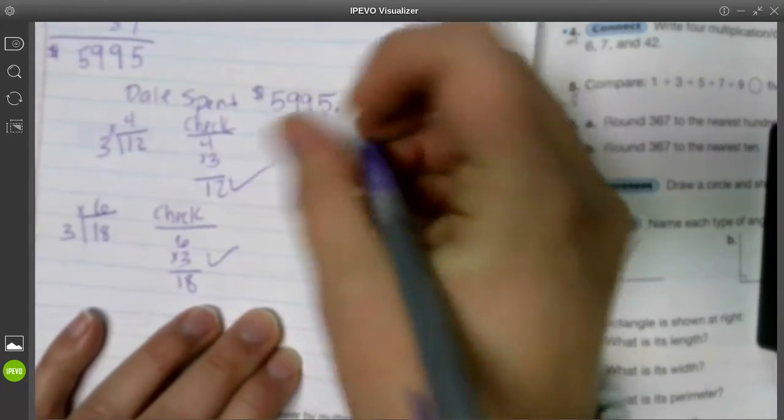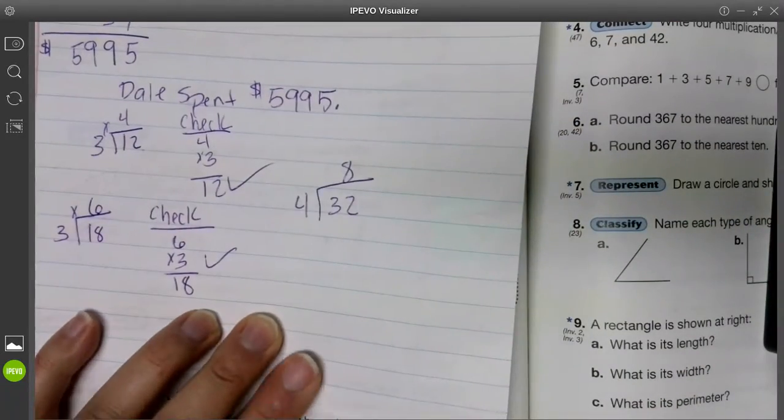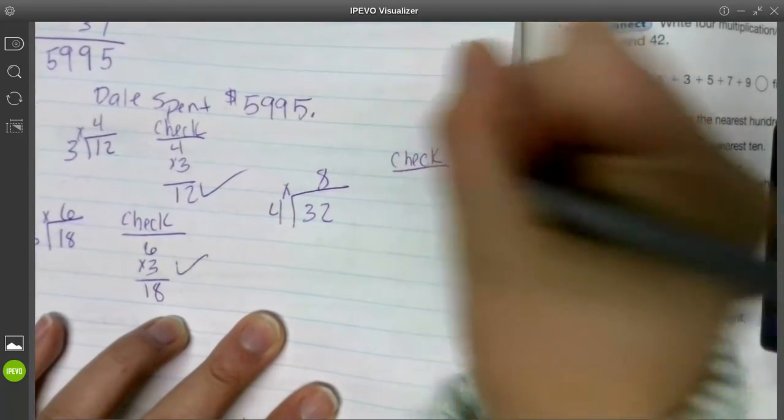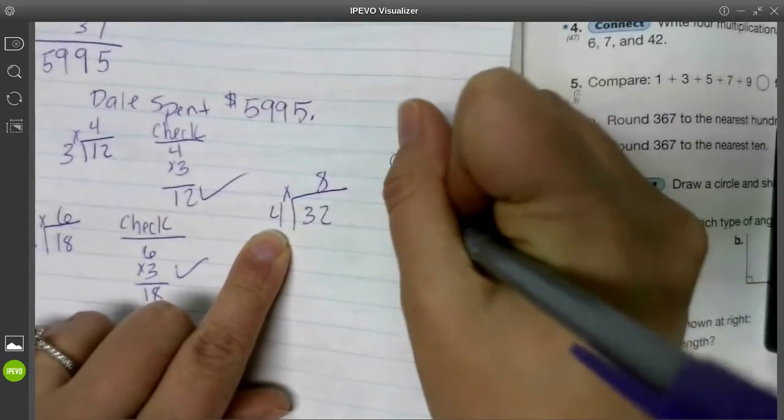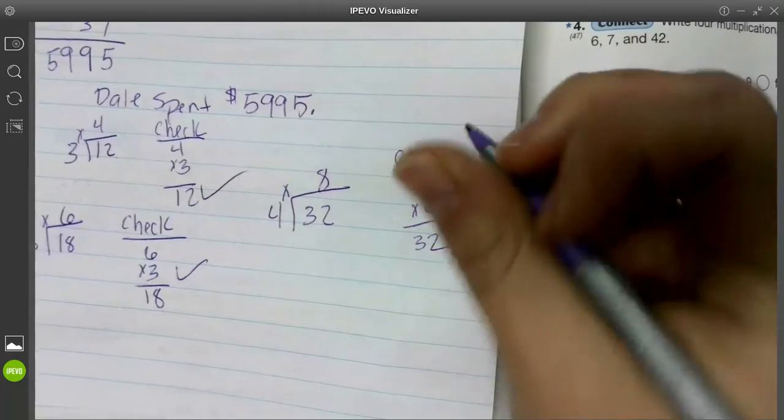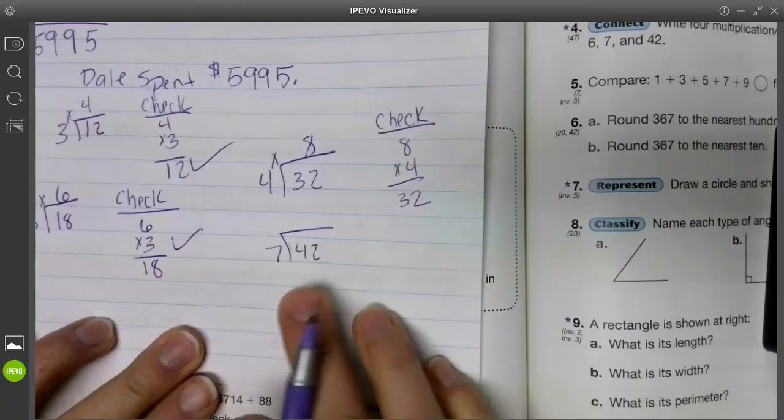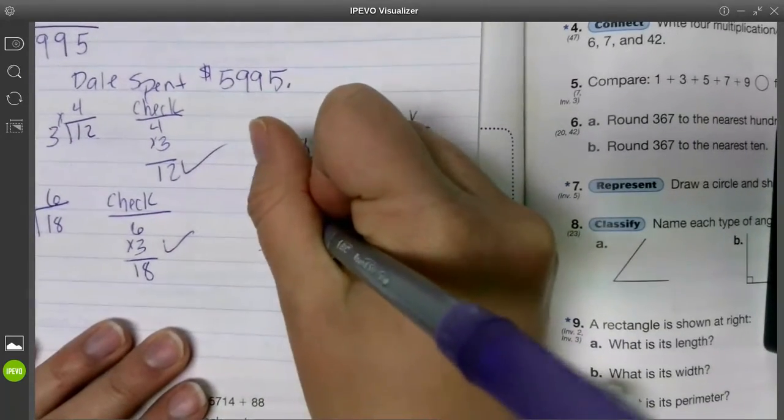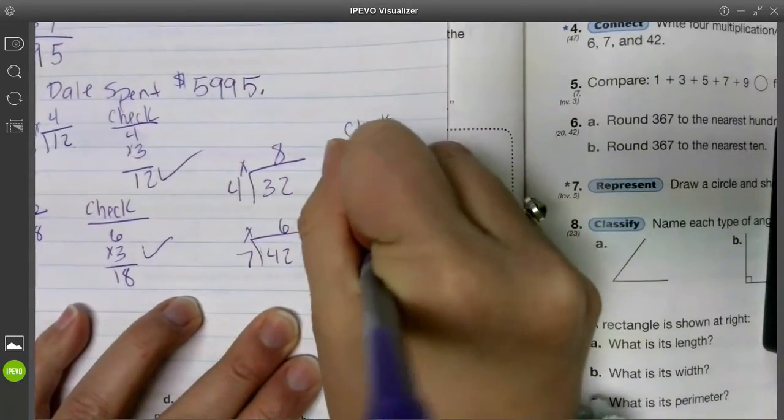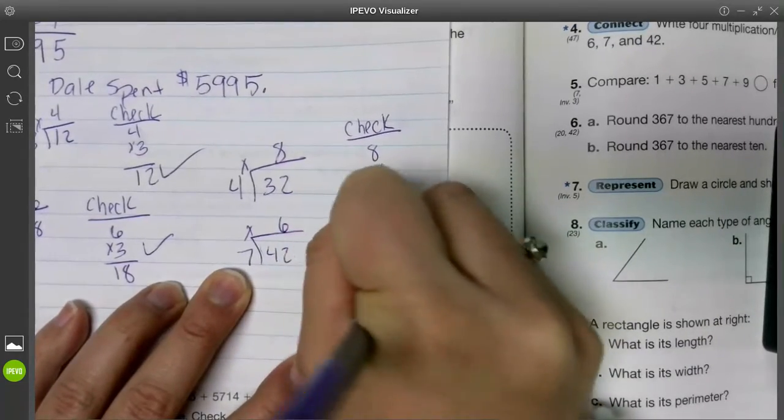So I take my 8, I multiply it by 4, and I'm going to get 32. All right, I'm going to do one more example with you guys. 42 divided by 7. Again, multiplication table, super helpful. I send the songs to you, super helpful. That is going to be 6, but then I have to check it. 6 times 7 is going to give me 42.